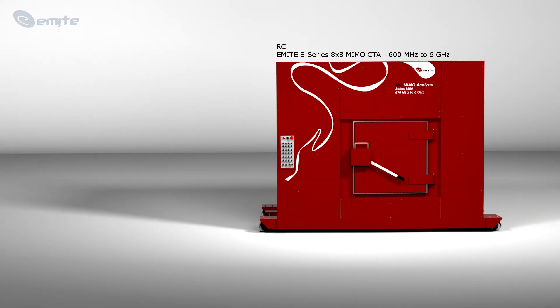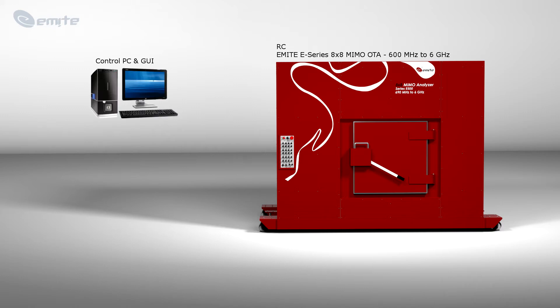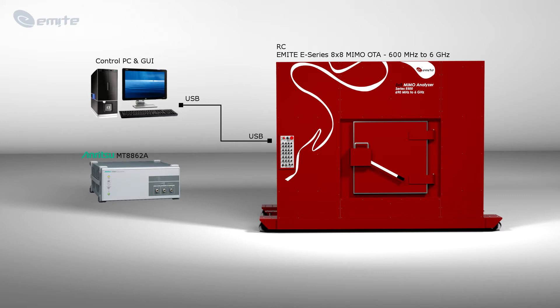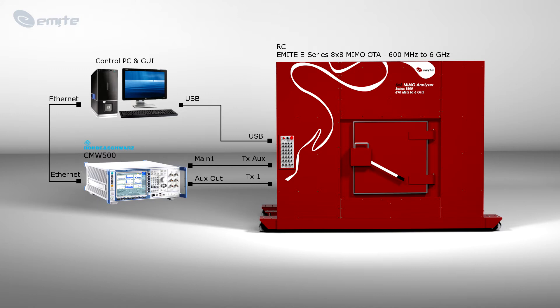For WLAN TRP TIS OTA testing, we will use our E500 medium-sized reverberation chamber, with a control PC running our intuitive MIMO analyzer graphic user interface software, and connected to the chamber by a USB cable. An Anritsu MT-8872A wireless connectivity test set will be used as an example, and connected to the E500 reverberation chamber front panel using RF cables. The Anritsu box is controlled through an Ethernet connection to the control PC. Other alternatives, like Rohde & Schwarz CMW500, are also possible.